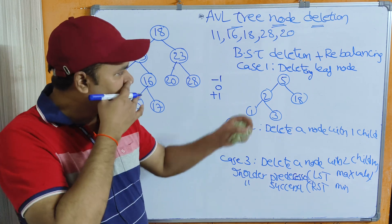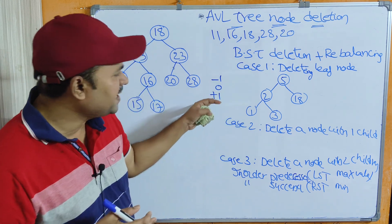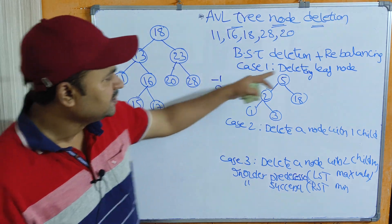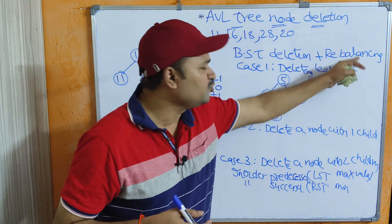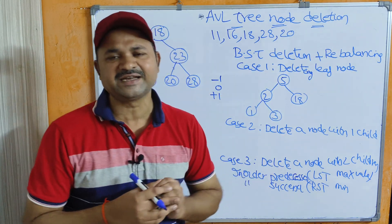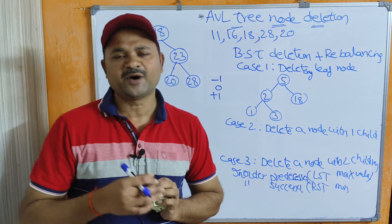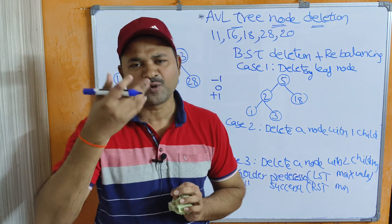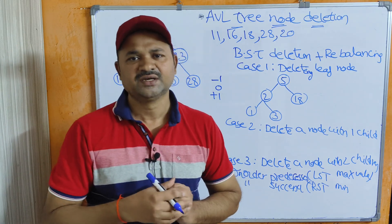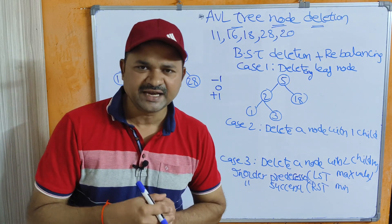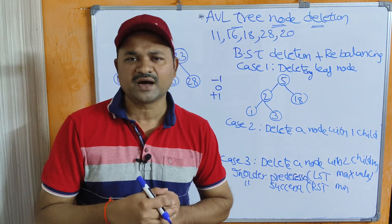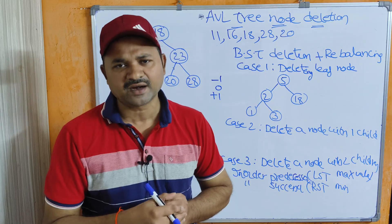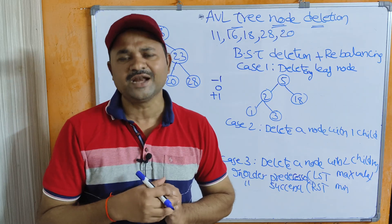If the tree becomes unbalanced, then we have to rebalance the tree by performing the corresponding rotation such as LL, RR, LR, or RL rotation.